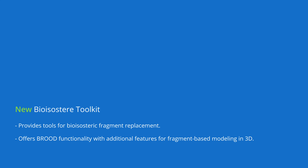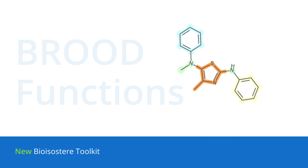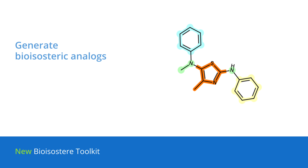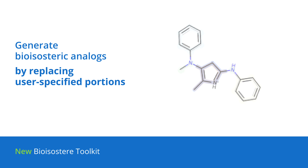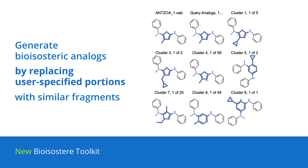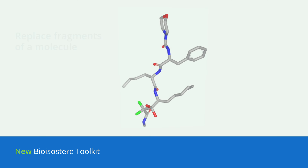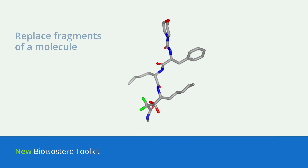Debuting in this release, BioIsostere offers BROOD functionality as a toolkit, allowing you to generate bioisosteric analogs by replacing user-specified portions of the lead compound with fragments that have similar shape and electrostatic similarity. BioIsostere also contains tools to replace fragments of a molecule based on shape and color or electrostatic similarity.